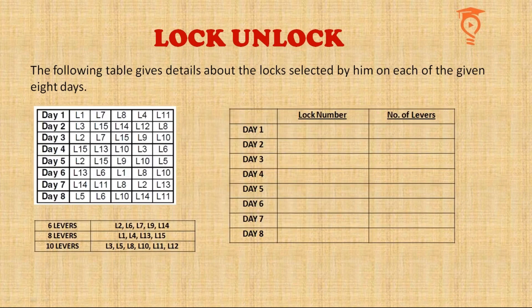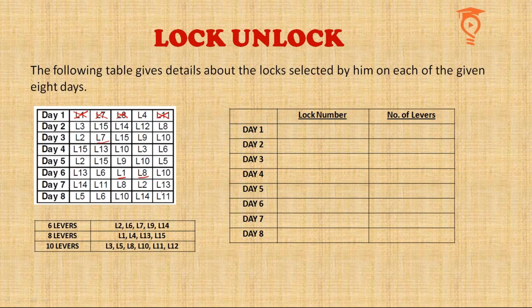Before facing the questions, I've prepared a table to help manage the data. On Day 1 there are five locks: L1, L7, L8, L4, and L11. L1 appears later, so it wasn't opened on Day 1. Similarly L7, L8, and L11 all appear on later days. Hence it must be lock L4, which has eight levers.